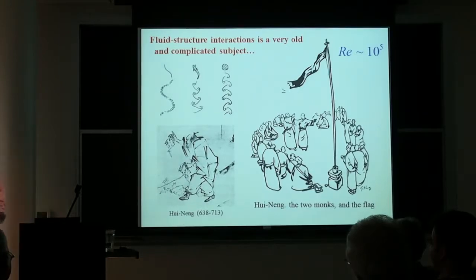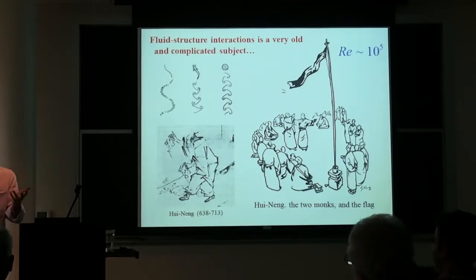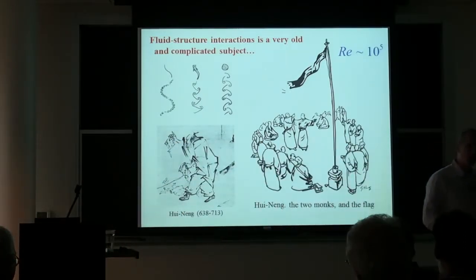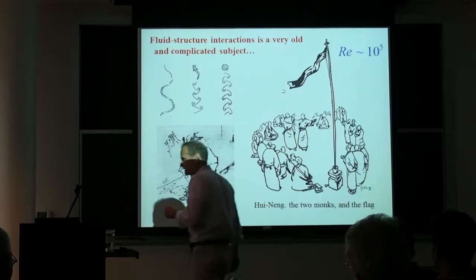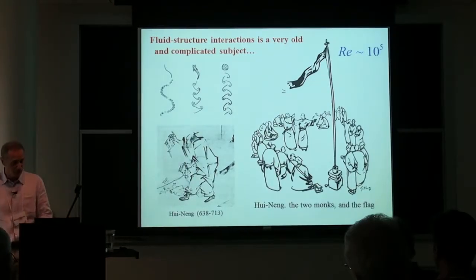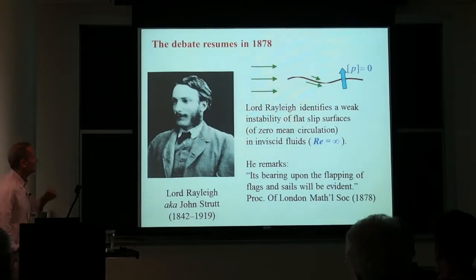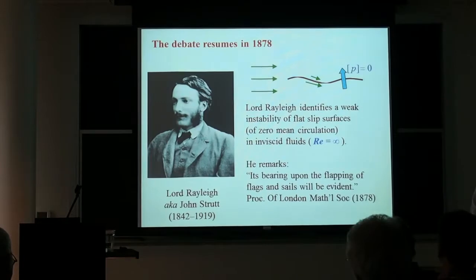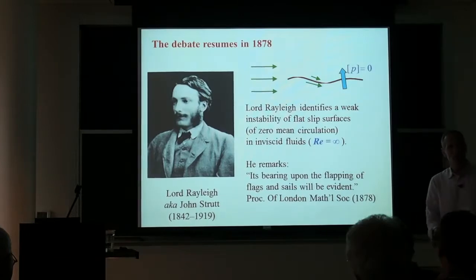The master was right in one sense: it's not either the flag or the wind independently — they move together as an integrated system. That's the beautiful part of fluid-structure interaction: you have to consider it in an integrated way. The motion of the body, driven by the fluid, changes the fluid flow — it's very intricately coupled. The debate resumed in 1878 when Lord Rayleigh published a paper on instabilities of what are called vortex sheets.